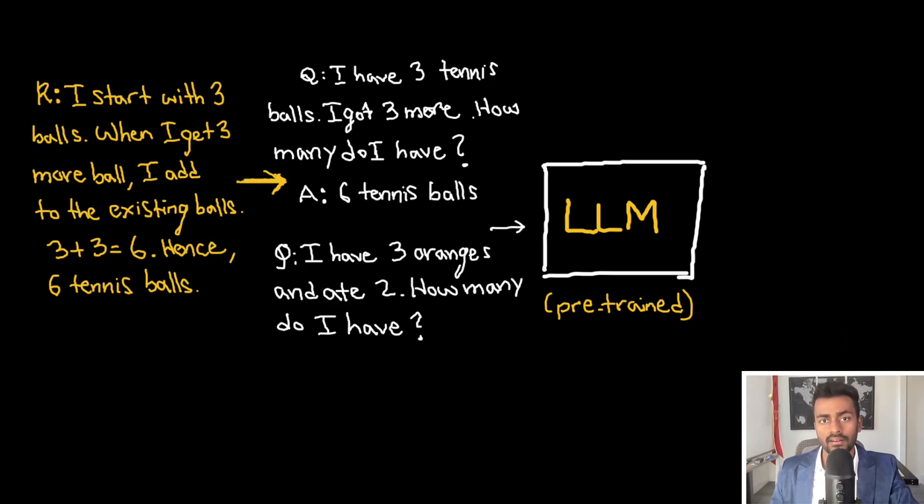But what we can do from here is now add a rationale or reasoning of how we got from this question to this answer. So we have that question. And in between the question and answer, we would say, well, I start with three tennis balls. And when I get three more balls, I add to the existing balls that I have, and three plus three is six, and hence, six tennis balls is the answer. So the answer is six tennis balls.